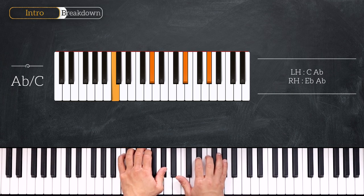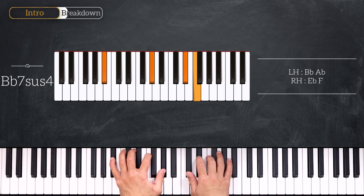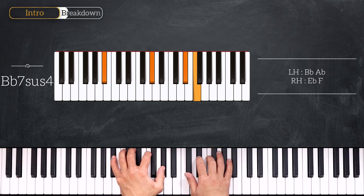And from here we'll play Bb7sus4 having Bb, Ab, Eb and F on the right hand.